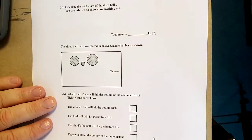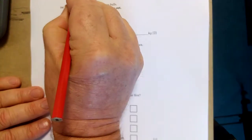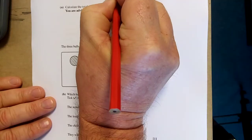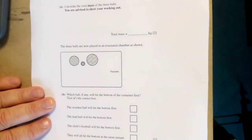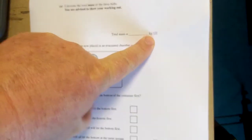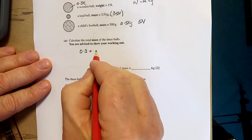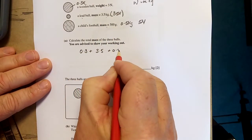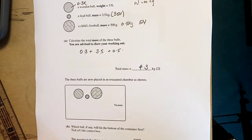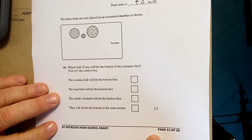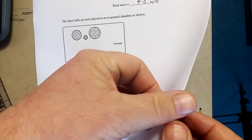Given information about three balls. W equals mg. Wooden ball - 3 newtons, that's 0.3 kilos. Lead ball - 3.5 kilos, 35 newtons. Child's football - 0.5 kilos, effectively 5 newtons. Calculate the mass of the three balls. They're looking at the mass of the three balls in kilos. So the wooden ball 0.3, the lead ball is 3.5, and the child's football 0.5. So that's 4.3 kilograms. On the next one, which ball, if any, will hit the bottom of the container first? They all hit at the same time. They'll hit the bottom at the same instant. Galileo's famous experiment on the Leaning Tower of Pisa.